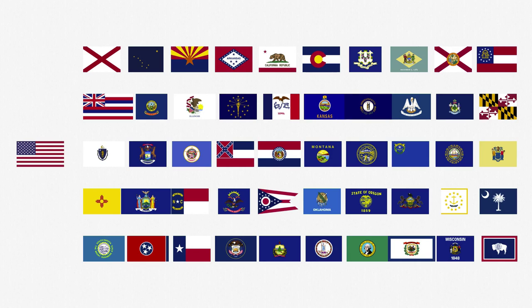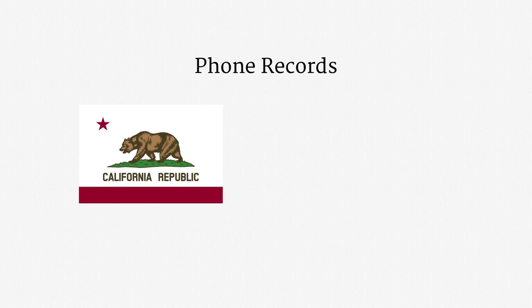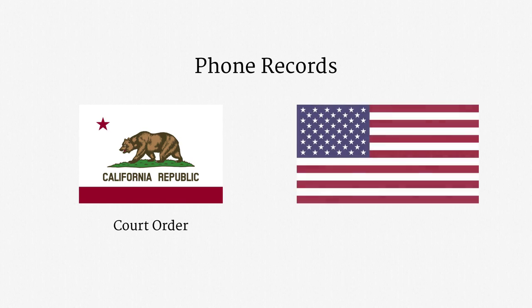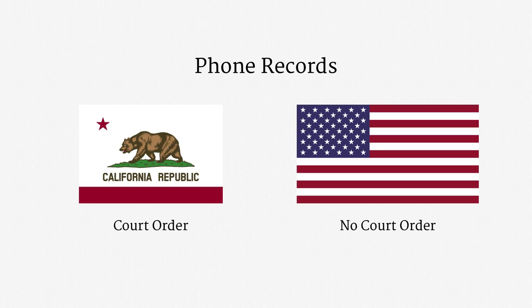Let me give a concrete example. Suppose a law enforcement officer is investigating a California resident and wants to pull that person's recent phone records. Under the California Constitution, as interpreted by the California Supreme Court, a court order is required — so if that officer is state or local police, they need to talk to a judge first. Under the United States Constitution, however, the Supreme Court has said that no court order is required. If the officer is federal, such as an FBI special agent, they can use a judge-free investigative tool. That's a simple example of how state law can be more protective than federal law.